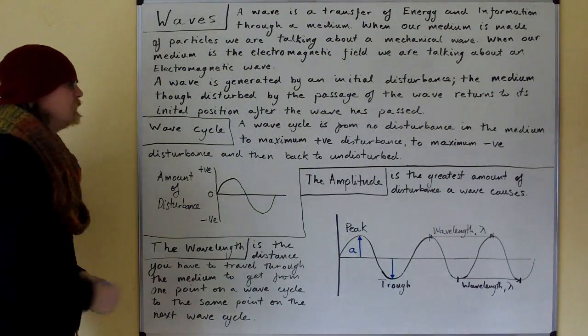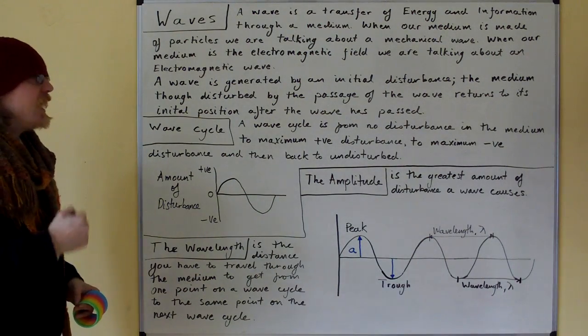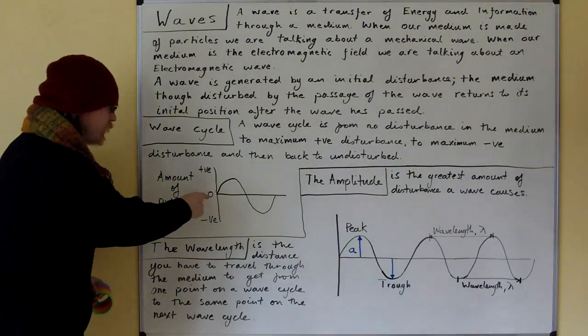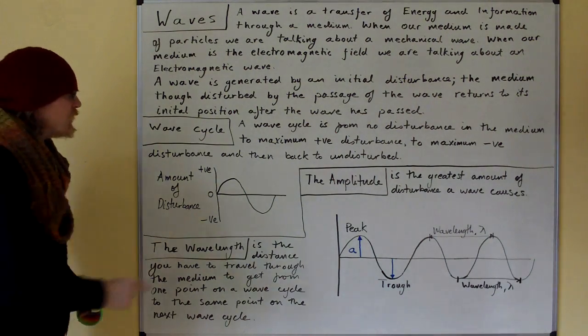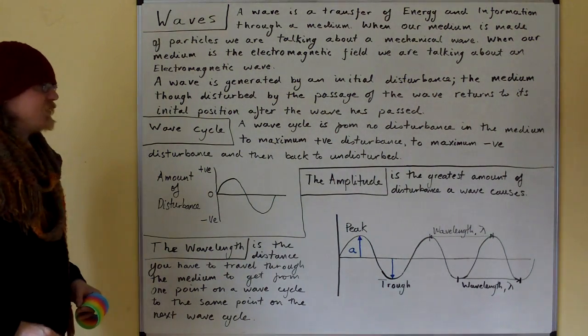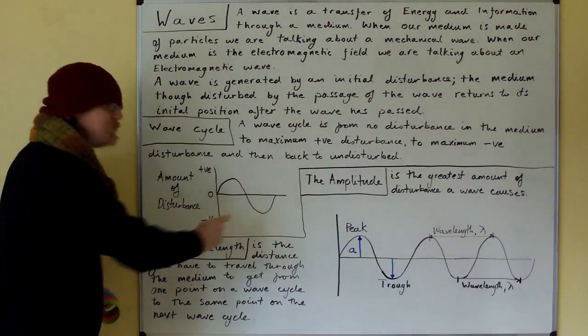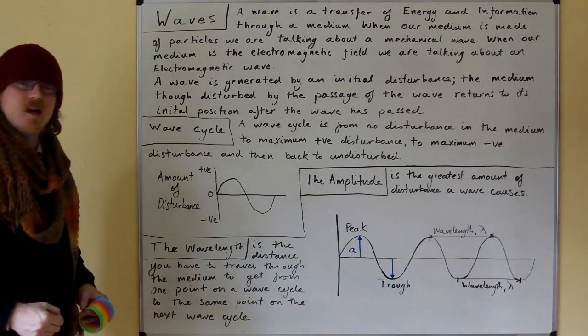The wave cycle. A wave cycle is from no disturbance in the medium to maximum positive disturbance to maximum negative disturbance and then back to undisturbed.